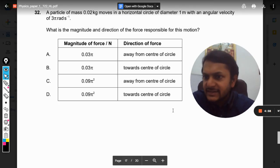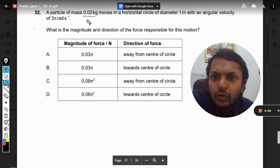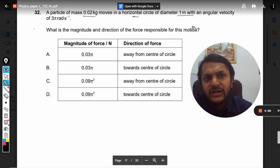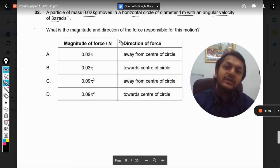Okay dear students, let us see what is there in this question. A particle of mass 0.02 kg moves in a horizontal circle of diameter 1 meter with an angular velocity of 3 pi radian per second. What is the magnitude and direction of force responsible for this motion?